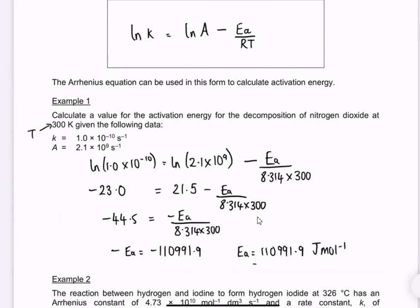So we need to give Ea in kilojoules per mole. So remember we're going to divide by 1000 to go into kilojoules per mole. I'll move the decimal place three spaces this way. So I'm going to go for 111 kilojoules per mole. I've rounded up at this point to three significant figures. And in fact I could have rounded to two significant figures and that would have been 110 kilojoules per mole.